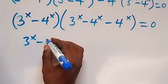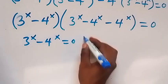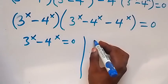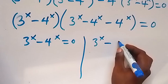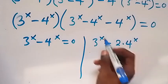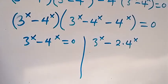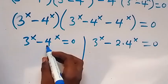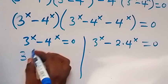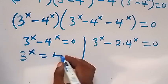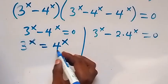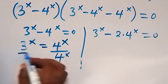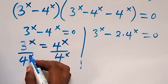From here we have two things multiplied equals to zero: either 3 raised to power x minus 4 raised to power x equals to zero, or we have 3 raised to power x minus 2 times 4 raised to power x equals to zero. On this first case, taking minus 4 raised to power x across, we have 3 raised to power x equals 4 raised to power x, so let's divide both sides by 4 raised to power x.